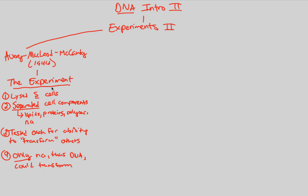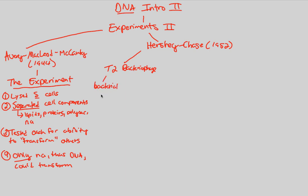The next experiment we want to look at is done by Hershey and Chase, conducted in 1952. Look at this buildup from the 1920s to the 1940s to the 1950s. Hershey and Chase are going to really drive home the fact that DNA is our genetic material. They were two biologists who studied T2 bacteriophage — a bacterial virus, a virus that infects bacteria. That's why it's called a bacteriophage; phage means virus.